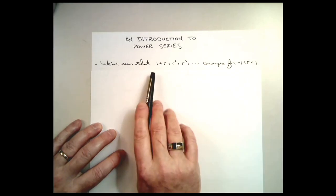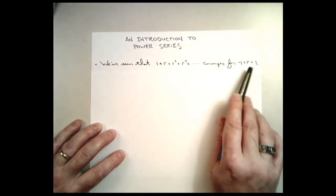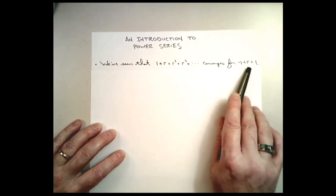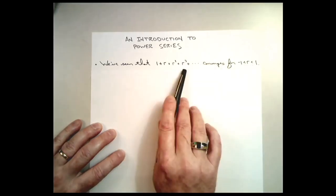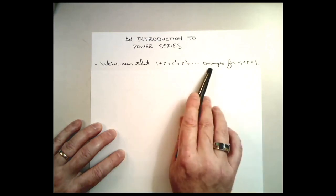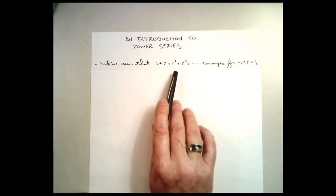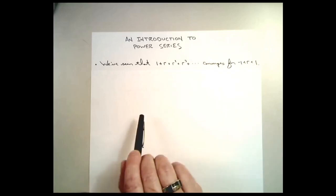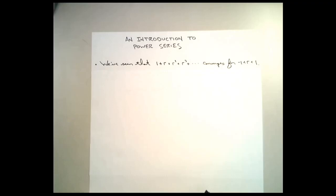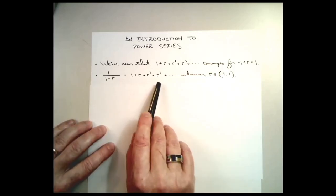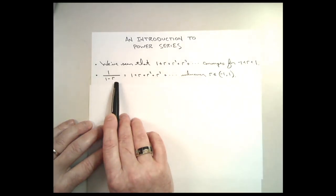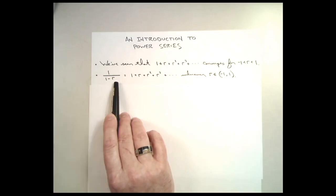We've seen that if I have a number r that lives strictly between negative 1 and 1, that adding together the powers of r gives us a convergent series. In particular, we call this a geometric series with ratio r, with r between negative 1 and 1. And let's recall also that for such a series, not only does it converge, but we know exactly to what it converges — it converges to 1 divided by 1 minus r. We talked about this at length in some of our earlier discussions.